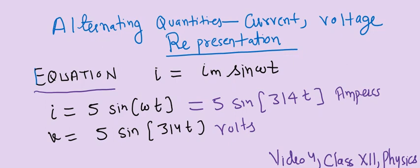This is the second way of representing any alternating quantity. The first form of representation was a waveform—we drew the diagram and showed a sine curve. The second way to represent an alternating quantity like current and voltage is an equation.